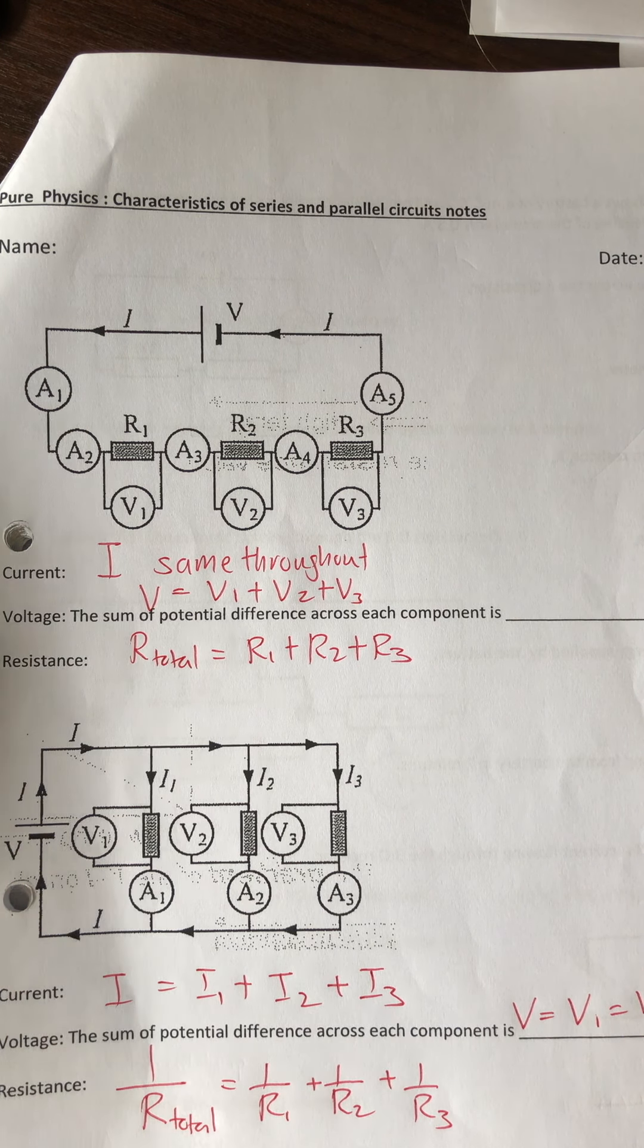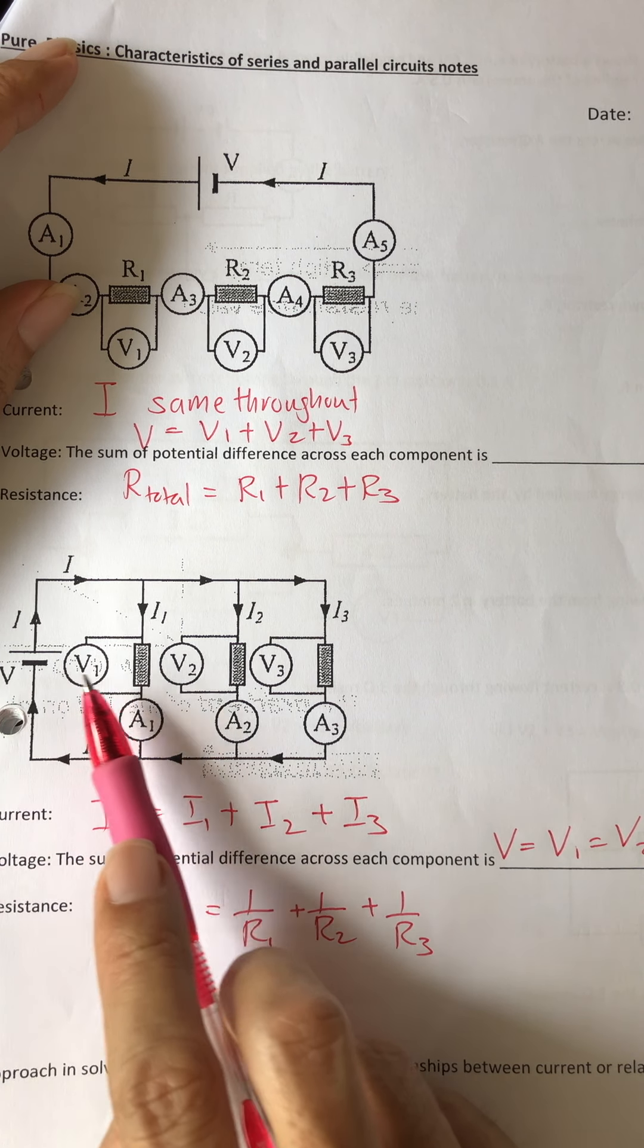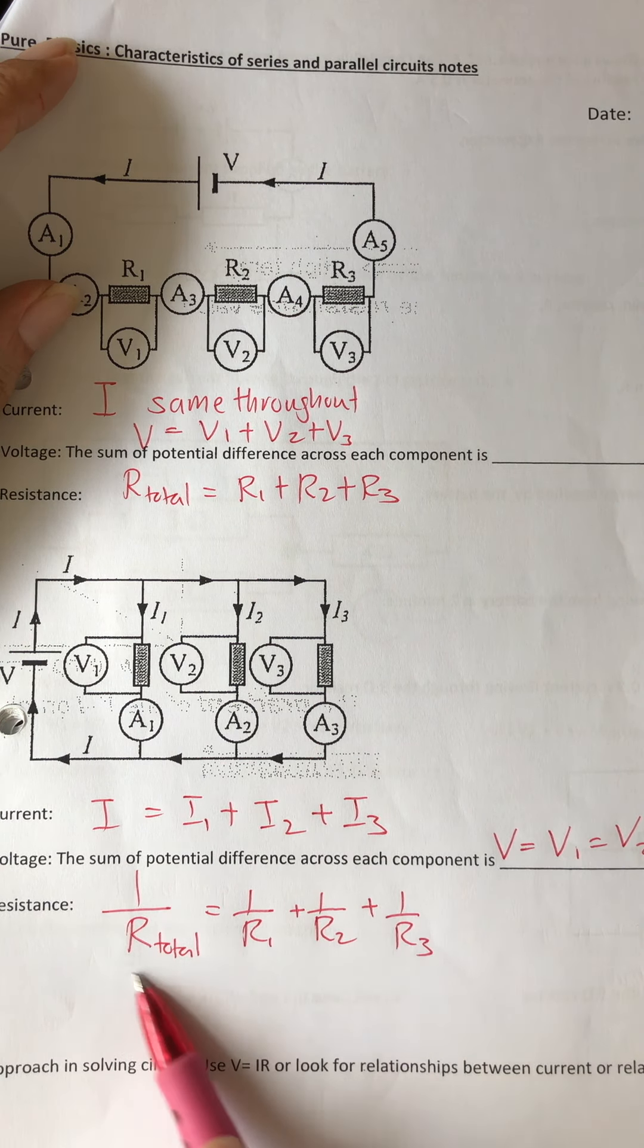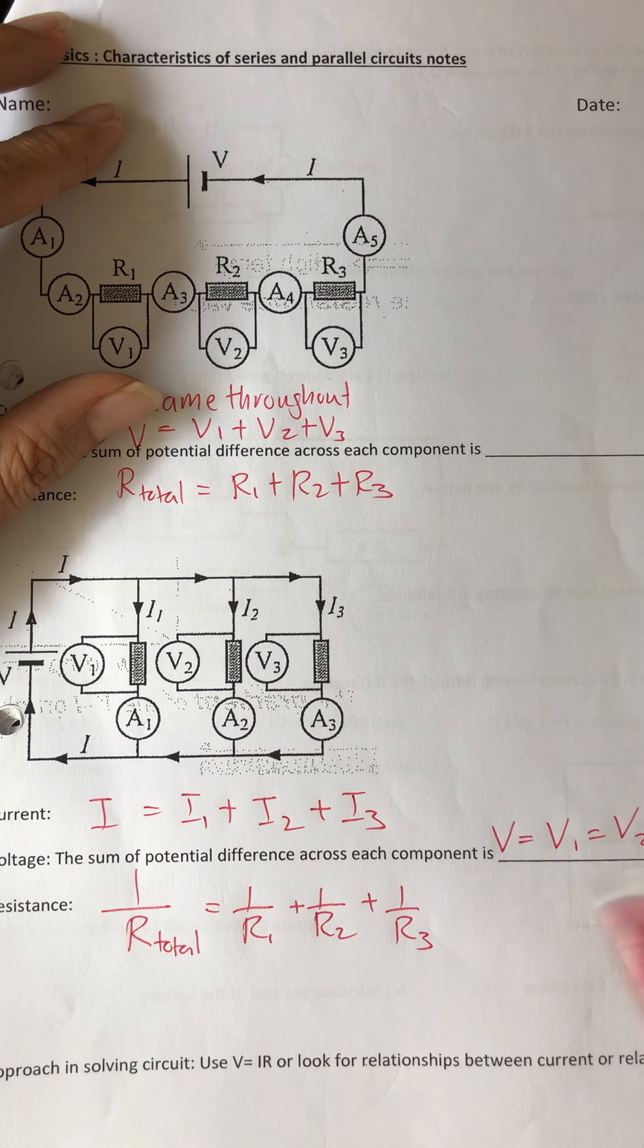The characteristics of series and parallel circuits - everybody knows this well. In a series circuit, the current is the same throughout, voltage V equals V1 plus V2 plus V3, and R total equals R1 plus R2 plus R3. In a parallel circuit, current splits up: I equals I1 plus I2 plus I3, the voltage is the same throughout: V equals V1 equals V2 equals V3, and for total resistance you use this formula.